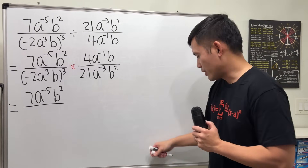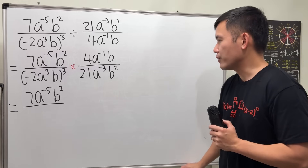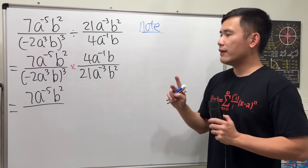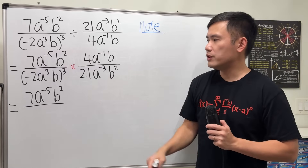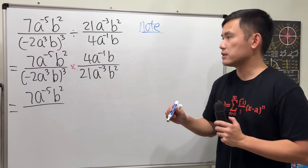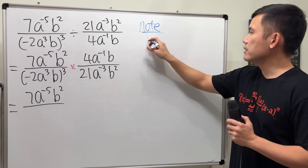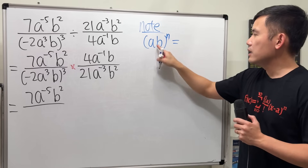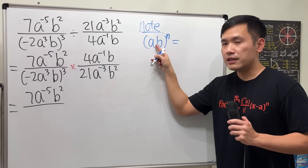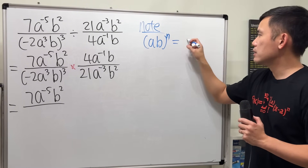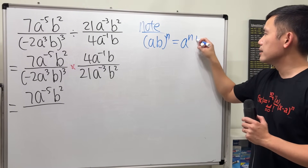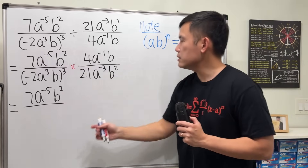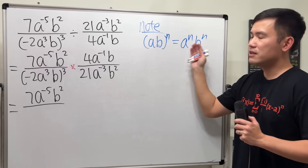I'm going to write down the first rule of exponents we are going to use. If we have two different bases — let's say a times b raised to some power n — if they are just multiplying inside, we can just distribute the power. This is the same as a to the n times b to the n. When we have three things, we can do it to all three of them — a, b, c — same thing.